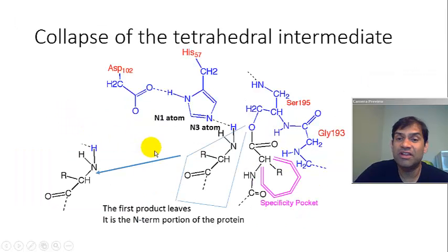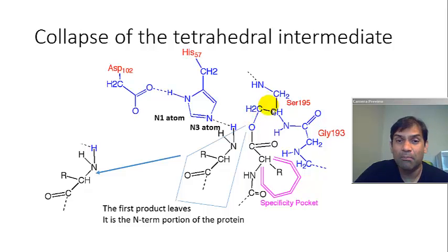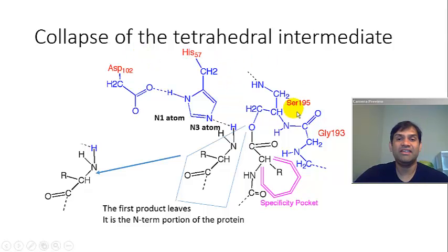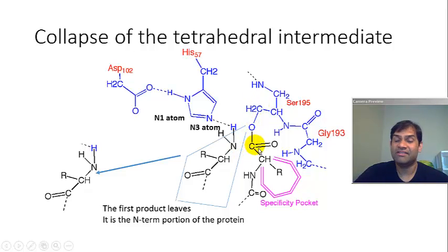The tetrahedral intermediate breaks down and the N-terminal portion of our protein actually leaves. Now we have an enzyme-substrate complex where the C-terminal of our protein is now attached to the serine of our serine protease. Most serine proteases have a ping-pong mechanism, and what you see here is the enzyme-substrate complex that is an intermediate in many of those ping-pong mechanisms. So now we have the C-terminal portion of our peptide attached to the serine.